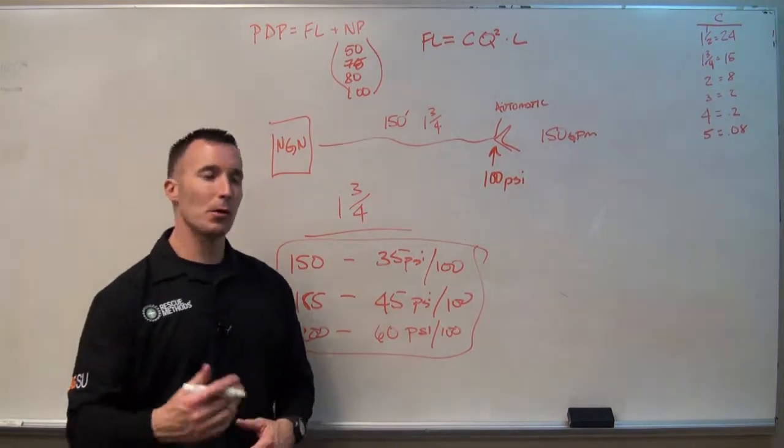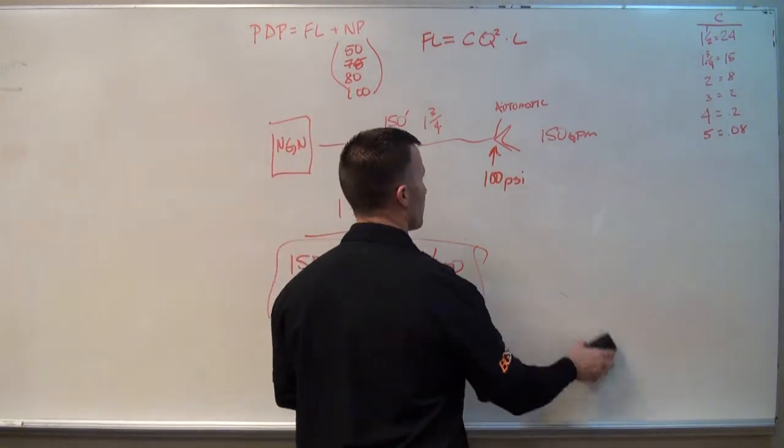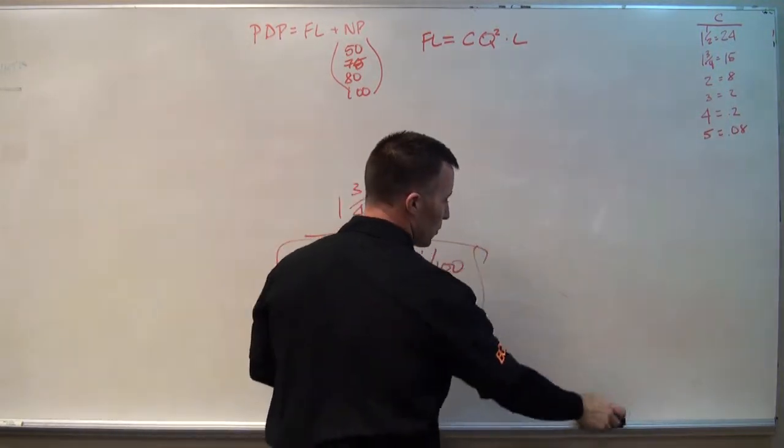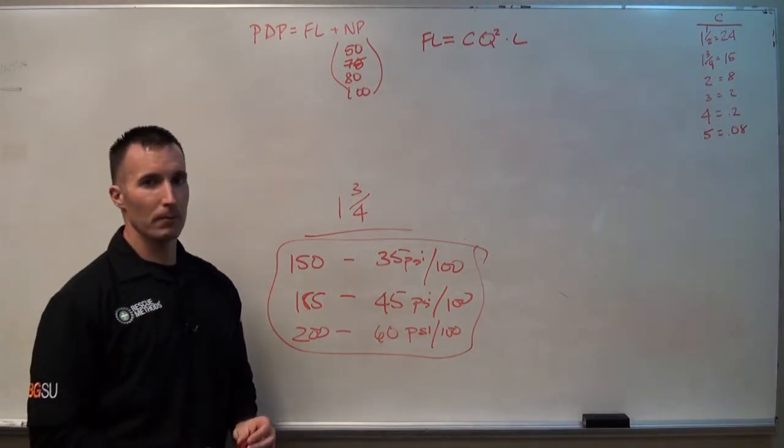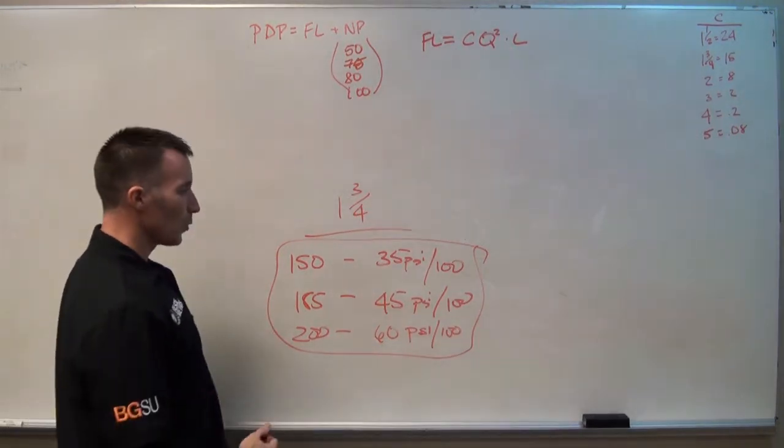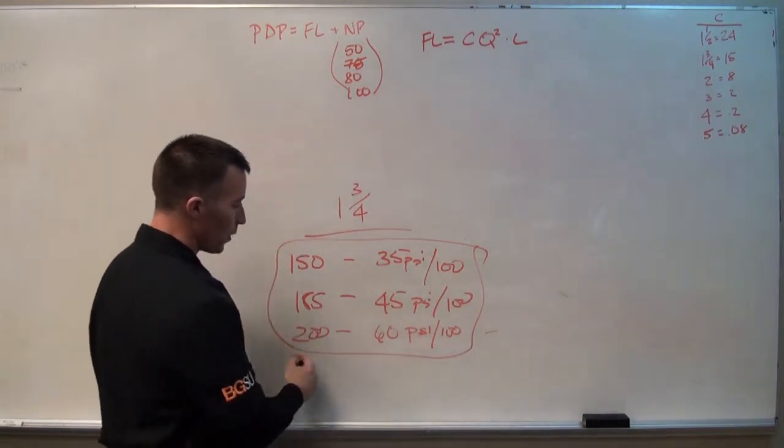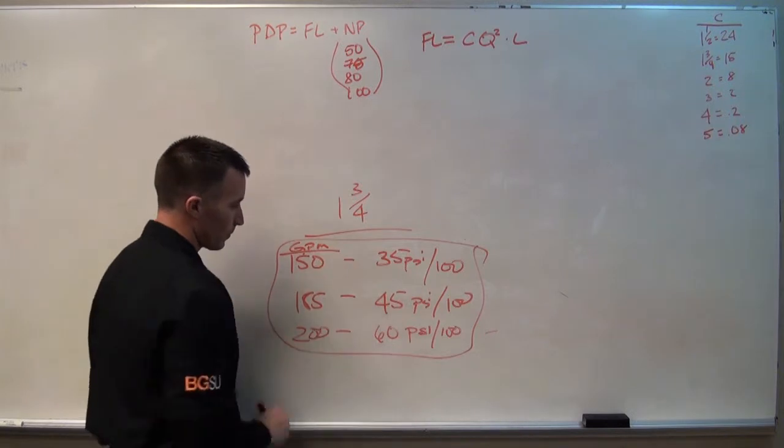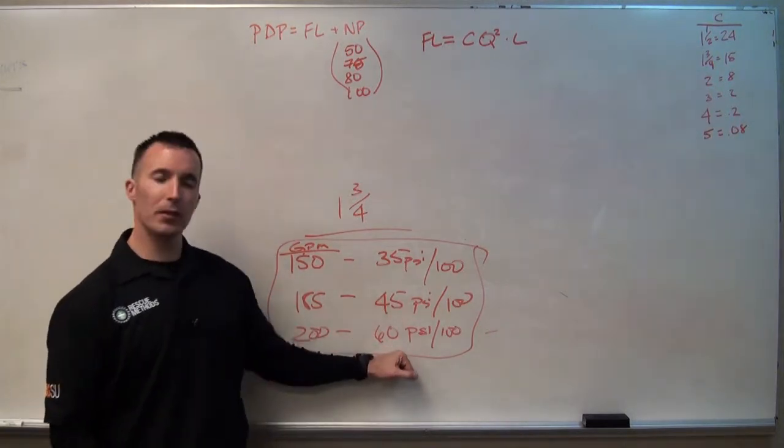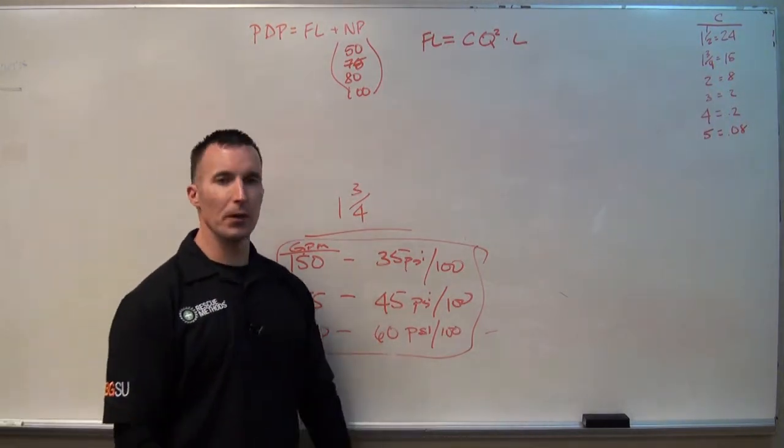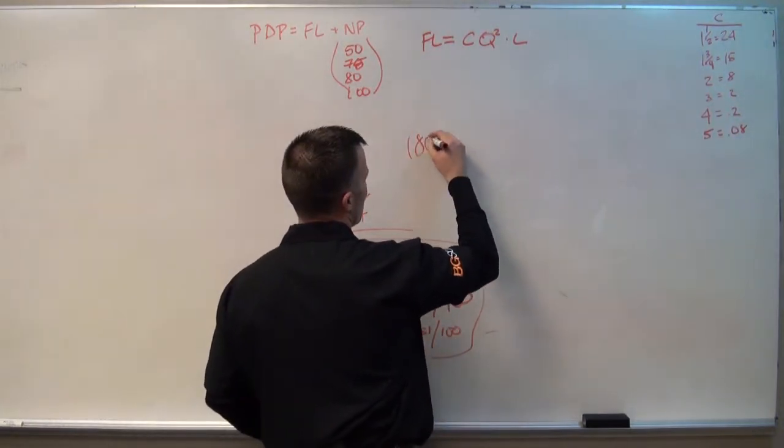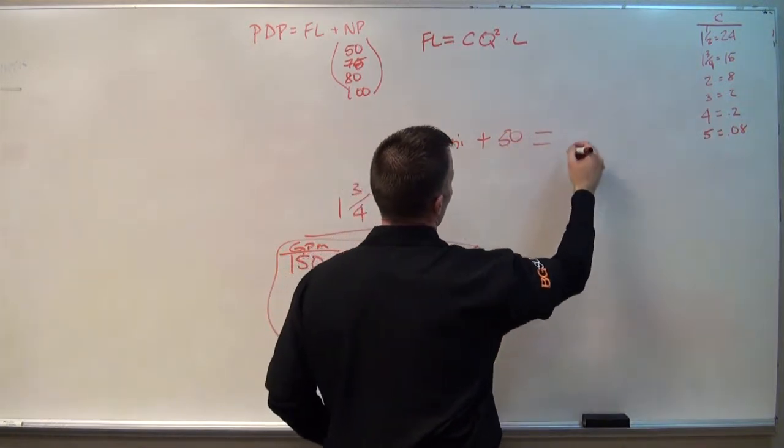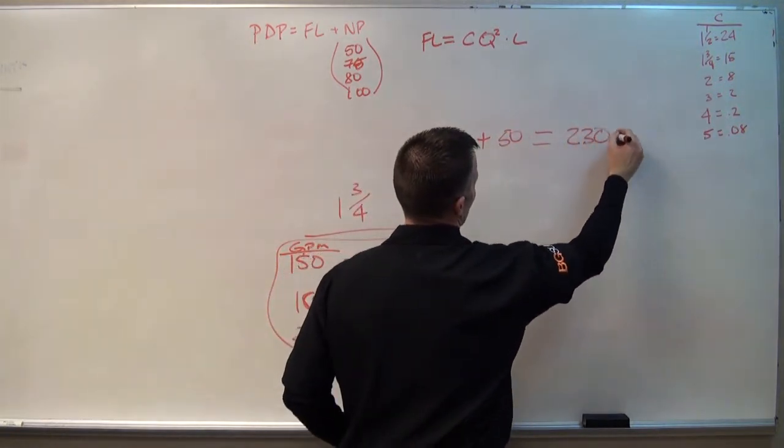Here's an example, I'll just whip off the top of my head: 300 feet of inch and three quarter with a smoothbore on the end of it, flowing 200 gallons a minute. What's my friction loss? I know my flow is 200 gallons per minute. I'm going to utilize 60 PSI per 100, 60 times 3, I got 180 pounds of friction loss, plus my nozzle pressure which is 50. My total pump discharge pressure is 230 PSI.